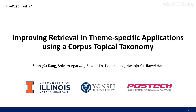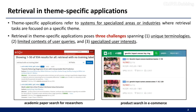Hello, and welcome to the introduction video for our paper entitled Enhancing Retrieval in Theme-Specific Applications Using a Corpus Topical Taxonomy. Theme-specific applications pertain to systems designed for specialized domains or industries, where retrieval tasks are centered around specific themes. Retrieval in theme-specific applications presents three challenges, encompassing unique terminologies, constrained contexts of user queries, and specialized user interests.